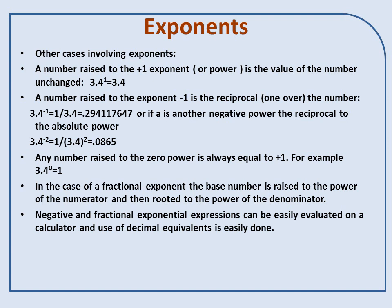Or if a is another negative power, the reciprocal to the absolute power, 3.4 to the minus 2, for instance, would be 1 divided by 3.4 squared, which is a whole lot less than .294.